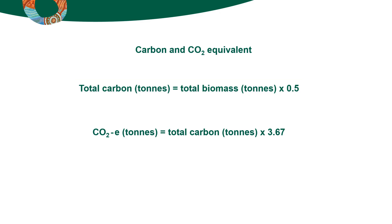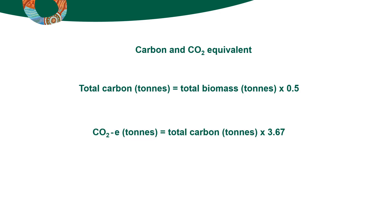Greenhouse gas emissions are commonly reported as carbon dioxide equivalents. This measure allows a comparison of the impact of various greenhouse gases, such as methane or nitrous oxides, in relation to their degree of atmospheric warming potential. To convert total stand carbon to carbon dioxide equivalents, multiply by 3.67, which is the ratio of the weight of a molecule of carbon dioxide to the weight of an atom of carbon.